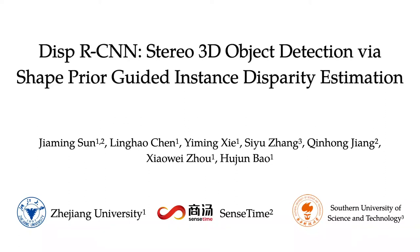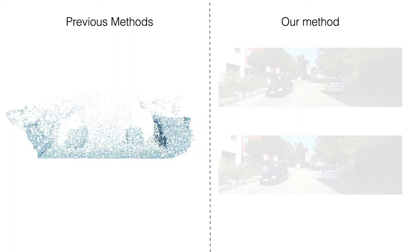We propose a novel system named DisparCNN for 3D object detection from stereo images. Many recent works solve this problem by first recovering a point cloud with disparity estimation and then applying a 3D detector. The disparity map is computed for the entire image, which is costly and fails to leverage category-specific prior.